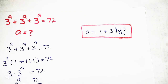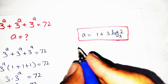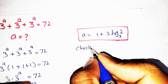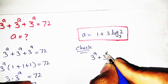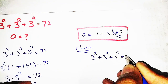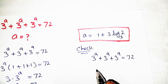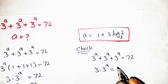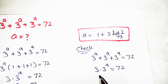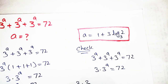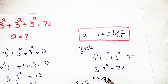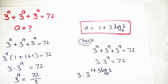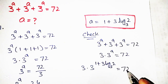Now we will verify this solution. We write the given equation as 3 raised to a plus 3 raised to a plus 3 raised to a is equal to 72, which simplifies to 3 into 3 raised to a is equal to 72. We now put the value of a, which is 1 plus 3 log base 3 of 2, and check it equals 72.